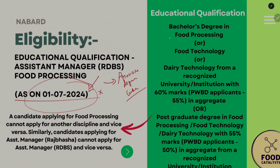For educational qualification, the options are a bachelor's degree in food processing, food technology, or dairy technology — only these three options. If you have an equivalent qualification related to these fields, you can submit that. Alternatively, a postgraduate degree in food processing, food technology, or dairy technology also makes you eligible.